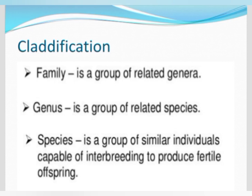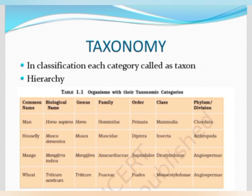The taxonomical hierarchy goes from kingdom down to species in descending order. This table is very important — they may ask about any order or family from it. The table shows the taxonomical hierarchy of man, housefly, mango, and wheat along with their biological names, genus, family, order, class, and phylum or division.